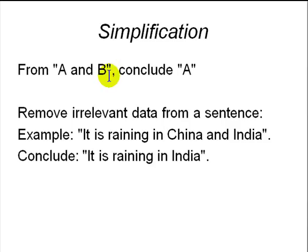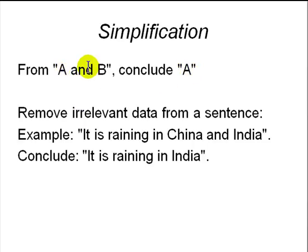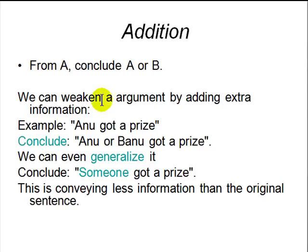The next rule is called simplification. Given A and B, we can simplify and ignore B if you are not interested in B, and just conclude A — or we could even conclude B only. This is used to remove irrelevant data. For example, it is raining in China and India, but you are in India so you don't really care about China — you can conclude it is raining in India.